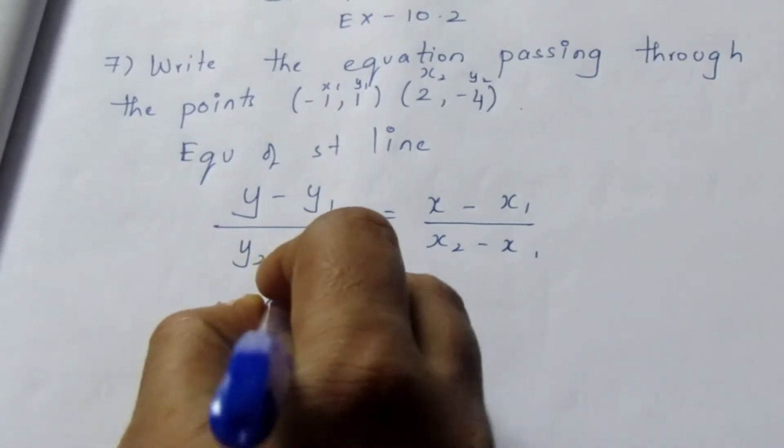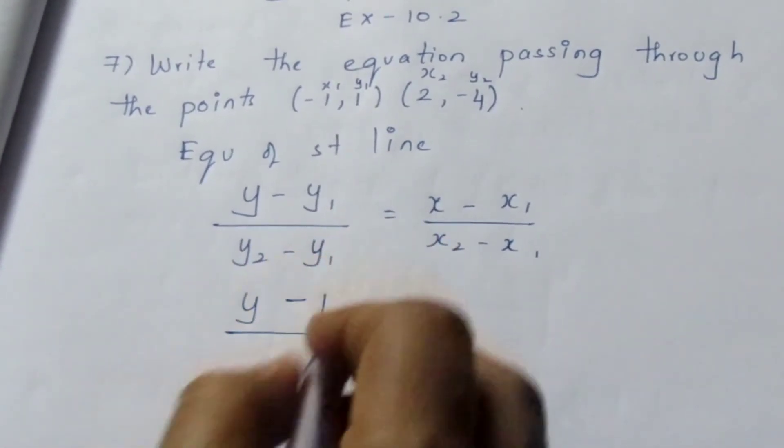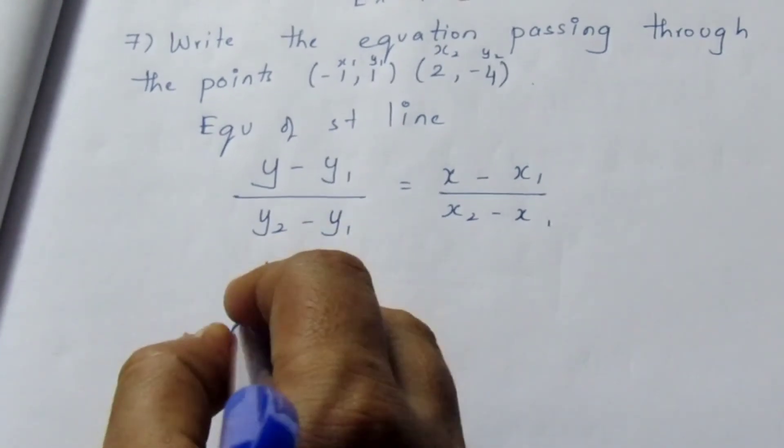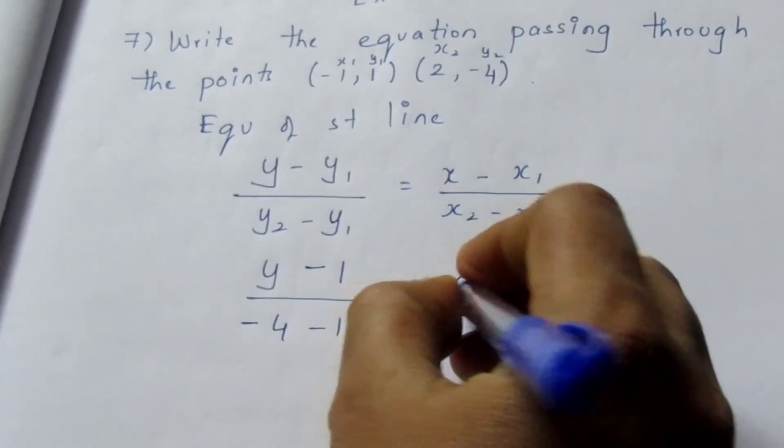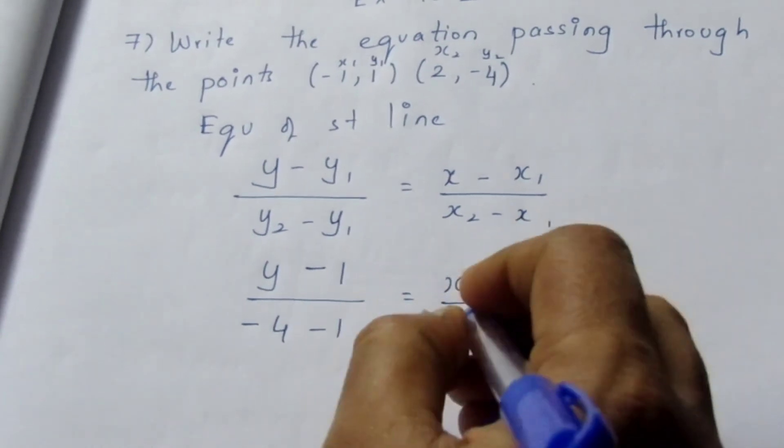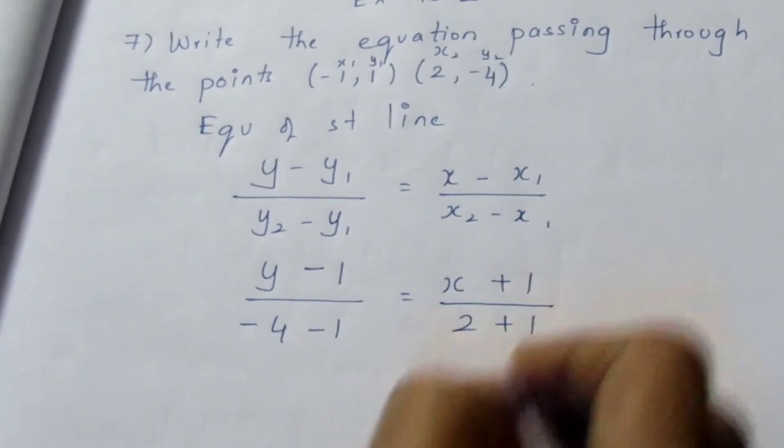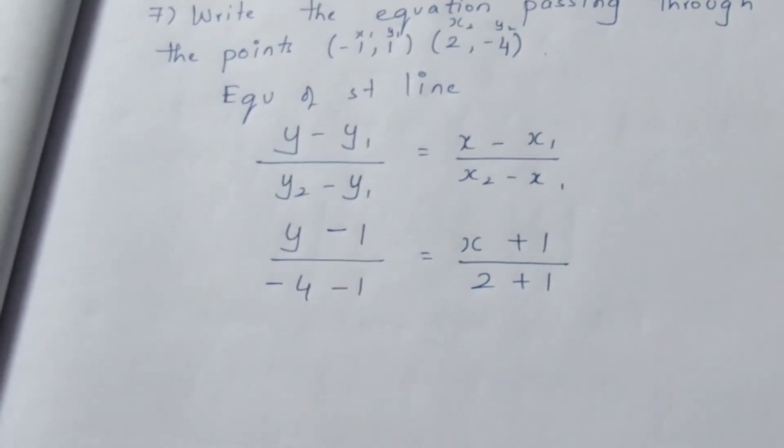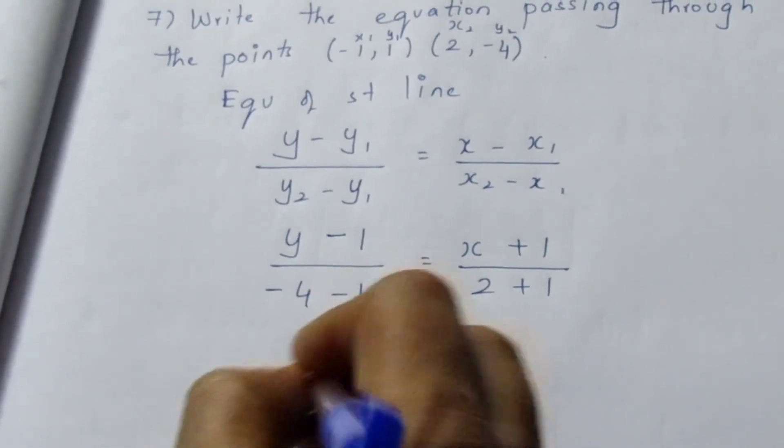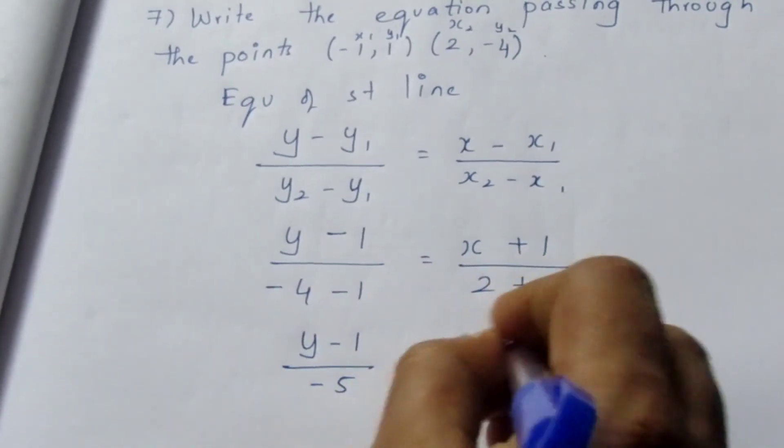Now, (y - 1)/(-4 - 1) = (x + 1)/(2 - (-1)). This becomes (y - 1)/(-5) = (x + 1)/3.